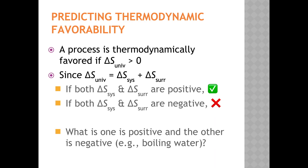We've almost completed the story on predicting whether a process increases the entropy of the universe and is thermodynamically favored according to the second law. A process is thermodynamically favored if delta S for the universe is positive. The change in entropy of the universe is the sum of delta S for the system and delta S for the surroundings. If both are positive, the process is always favored. If both are negative, the process is always not favored — the reverse process would be favored.